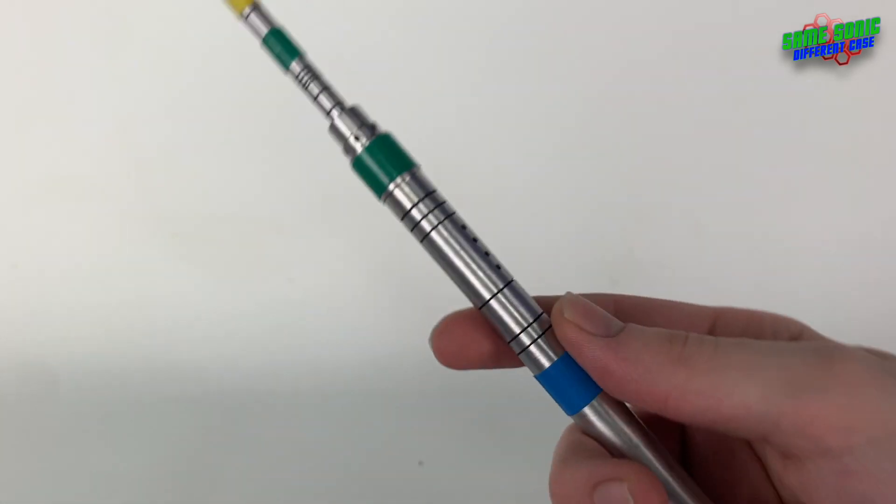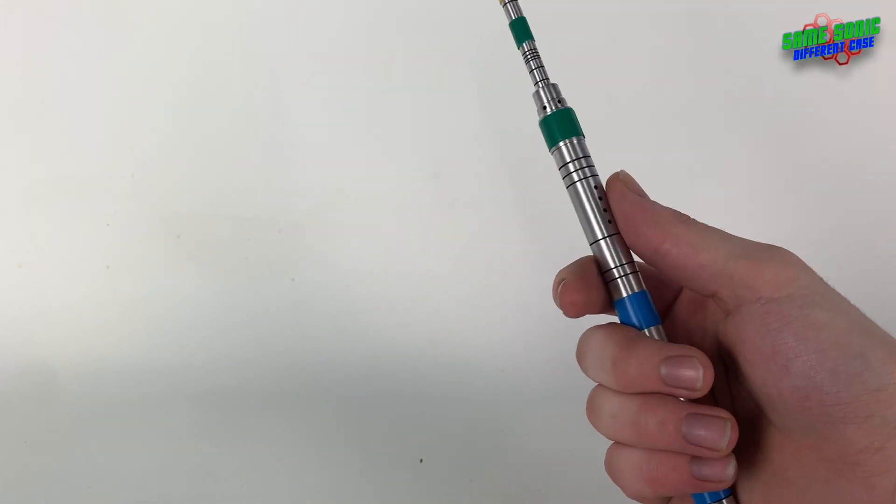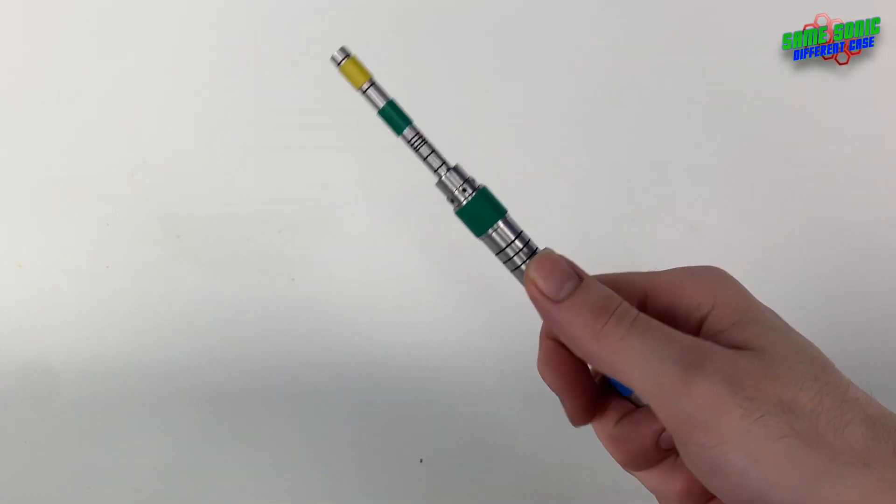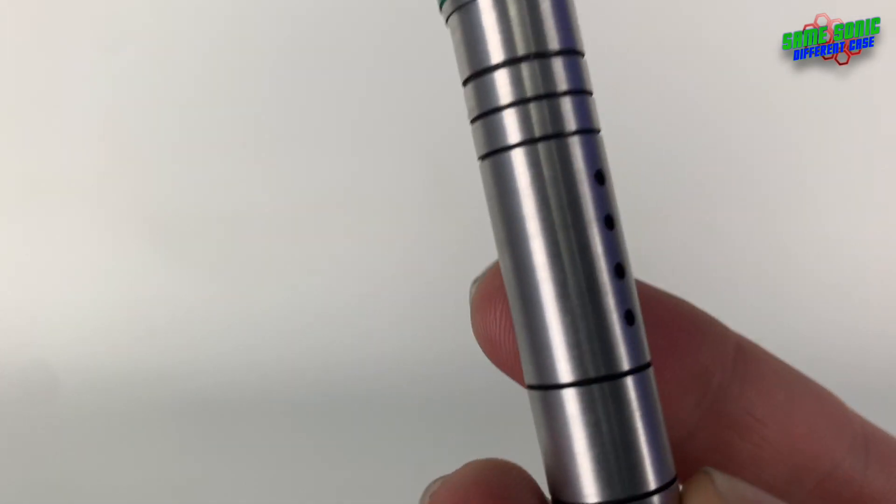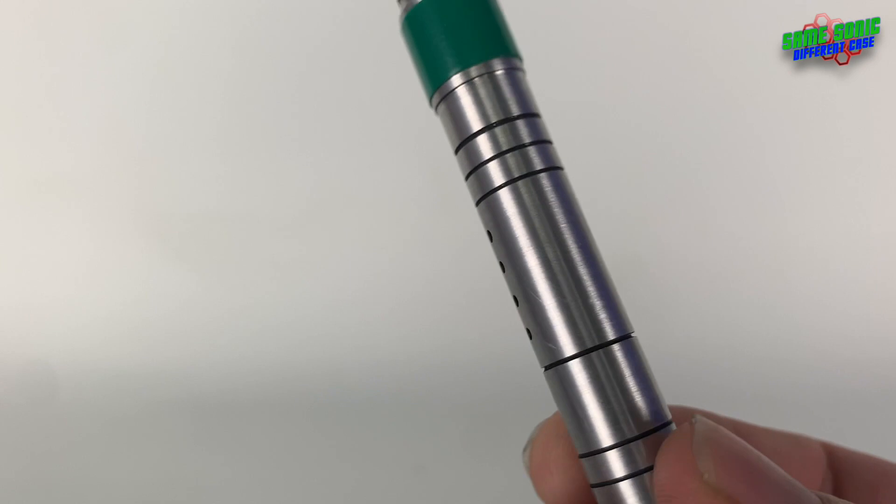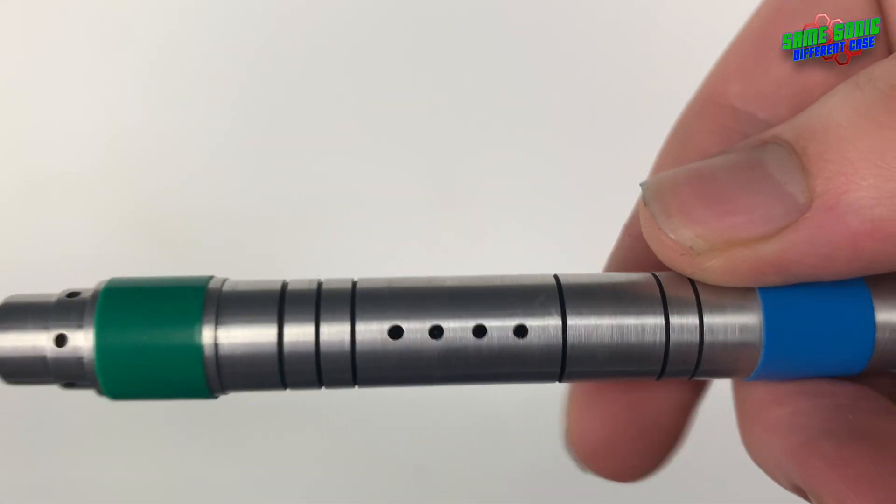And onto here. So I'd imagine you'd hold it like that and this would be the control section here. It's just four black dots on either side which have been milled in there. Nice and straight.